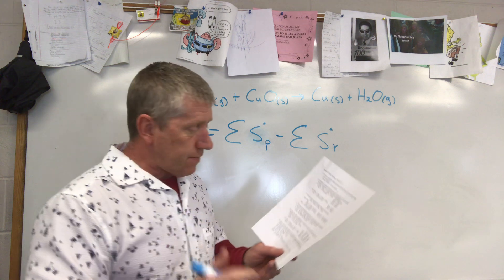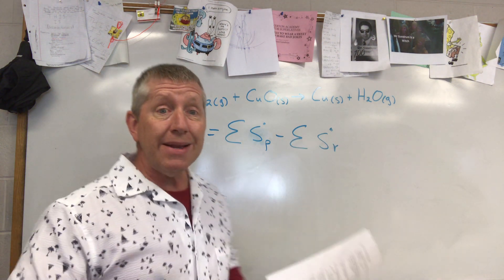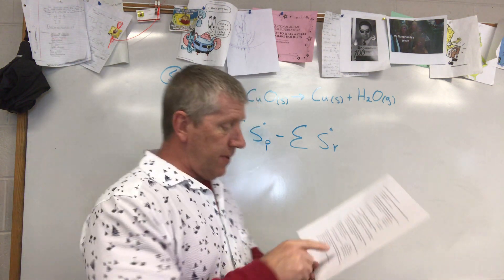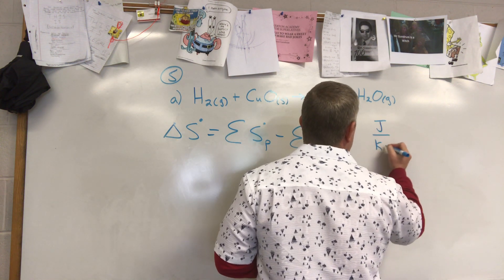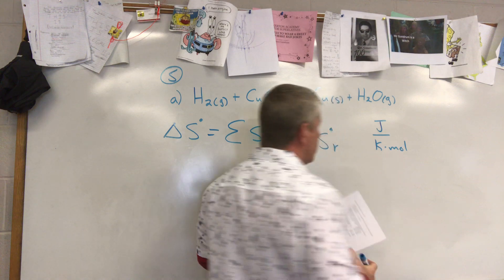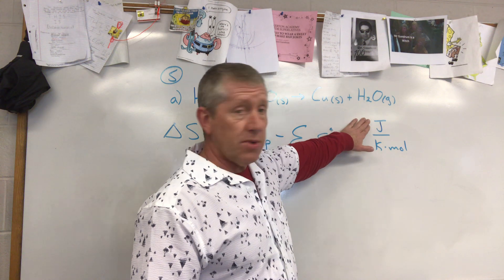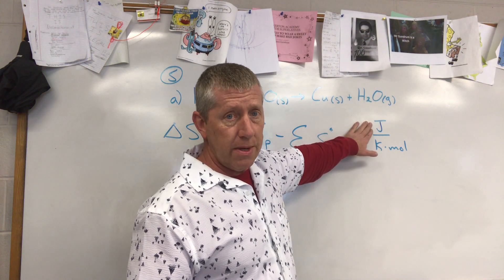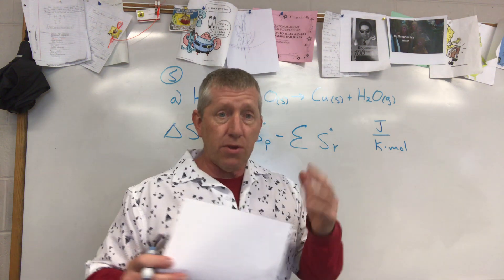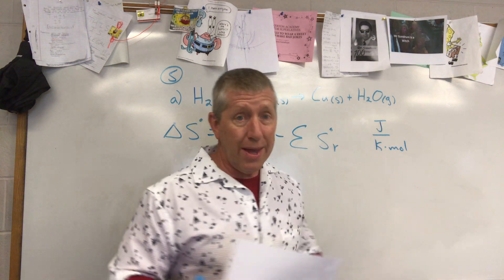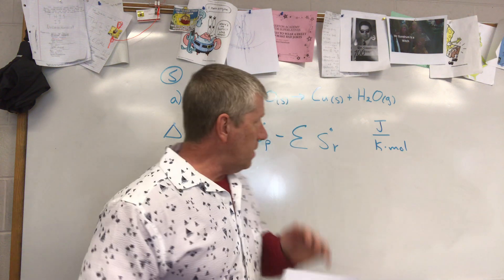One thing to point out: the units for S values are not in kilojoules per mole like they were with Delta H. This time we're in joules per mole - two things are different. The energy is in joules not kilojoules because entropy changes are much smaller than heats of reaction from Delta H formations. These are much smaller changes, so we don't have a 'k' in front of the joules.